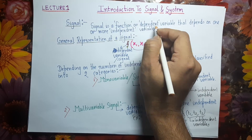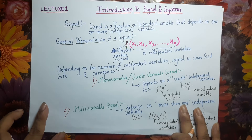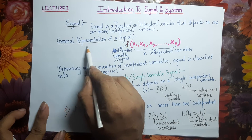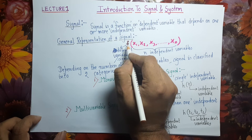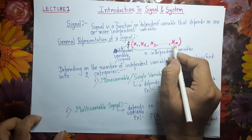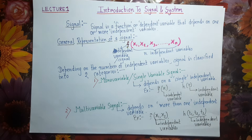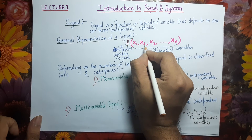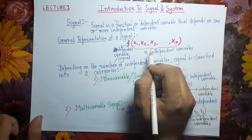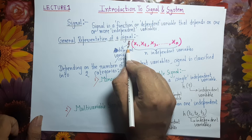Let us understand the general representation of a signal. We first write the dependent variable F, and inside the bracket we write the N independent variables on which the signal depends — X1, X2, X3, up to Xn. So X1 to Xn are the N independent variables on which the dependent variable or signal F depends.